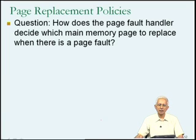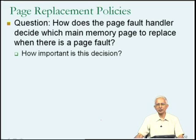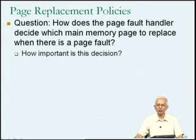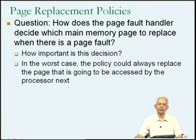We are about to look at what criteria the operating system page fault handler might use to decide which page to eliminate from main memory in the event of a page fault. This decision-making part is called a page replacement policy — an algorithm used to make the page replacement decision. The question is: how does the page fault handler decide which main memory page to replace when there is a page fault and there are no free memory pages?